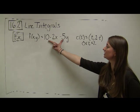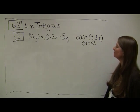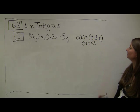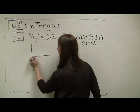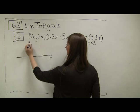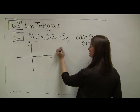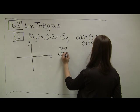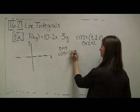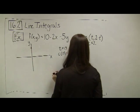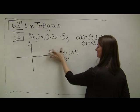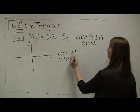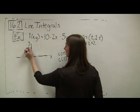Let's put this into action with an example. Let's say my magic carpet function has height given by f(x,y) = 10 − 2x − 5y, and my path is c(t) = (t, 2−t) with t going from 0 to 2. First I want to get an idea of what my path looks like. When t equals 0, c(0) = (0, 2), and when t equals 2, c(2) = (2, 0).